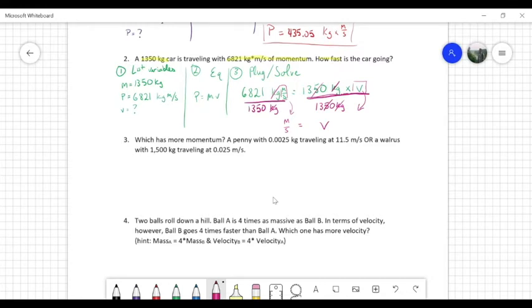And by the way, this is a good place to note we are on the right track because our units work out. We end up with meters per second, which is the unit for velocity. Now we just need to do the regular math. 6,821 divided by 1,350 is equal to, plug that into your calculator, you get 5.05 meters per second. Nice.